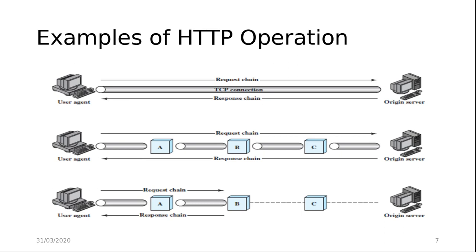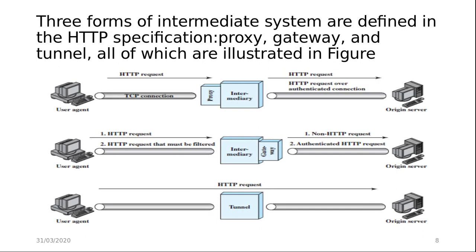The second diagram shows a case in which there is not an end-to-end TCP connection between the user agent and the origin server. Instead, there are one or more intermediate systems with TCP connections between locally adjacent systems. Each intermediate system acts as a relay, so that a request initiated by the client is relayed through the intermediate system to the server, and the response from the server is relayed back to the client. Three forms of intermediate systems are defined in the HTTP specification: proxies, gateways, and tunnels.